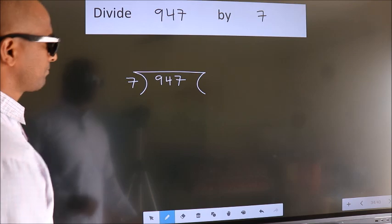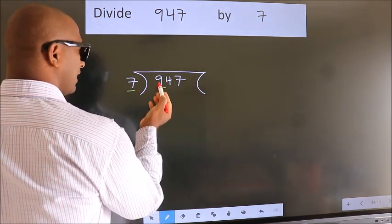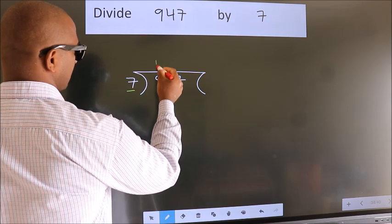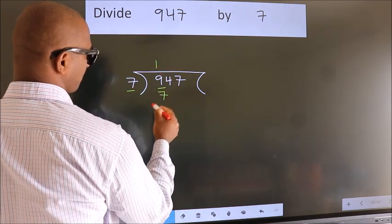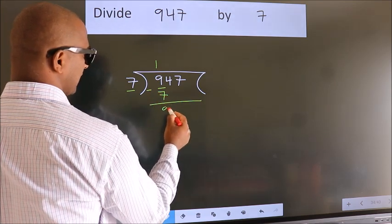Next. Here we have 9. Here 7. A number close to 9 in the 7 table is 7 ones, 7. Now we should subtract. We get 2.